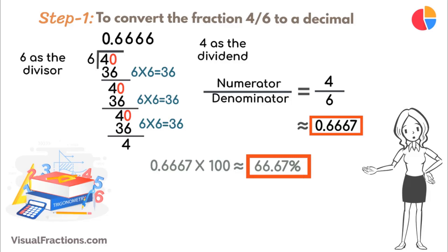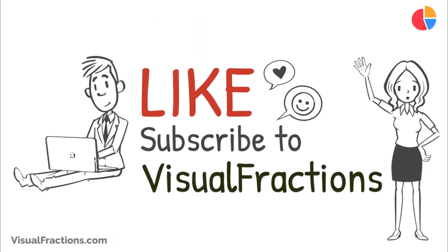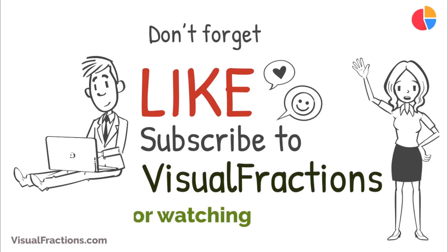So, there we have it. The fraction 4 sixths, which simplifies to 2 thirds, expressed as a percent is approximately 66.67%. If this video made it easier to understand how to convert fractions to percentages, don't forget to like and subscribe to Visual Fractions for more math tutorials.